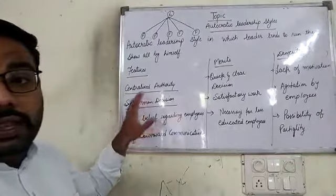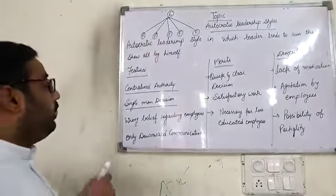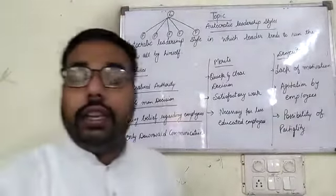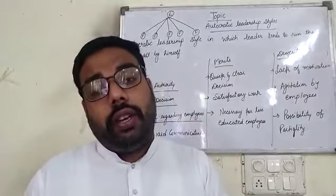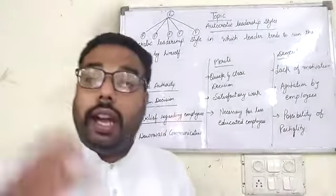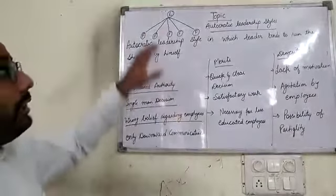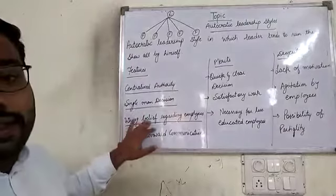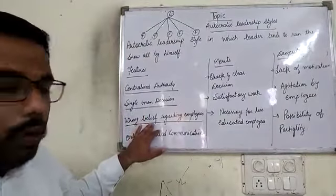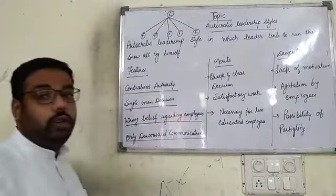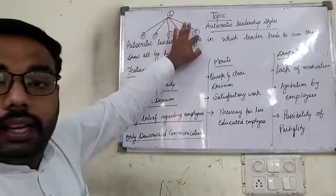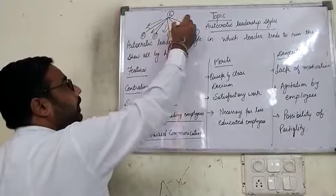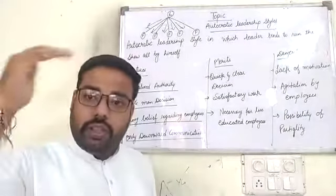Third is a wrong belief regarding employees — the autocratic leader believes that employees are not capable of taking decisions. Fourth is only downward communication — only downward communication is there in autocratic leadership style.